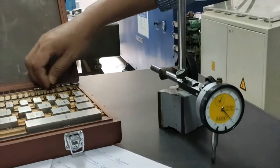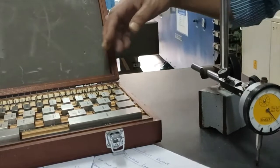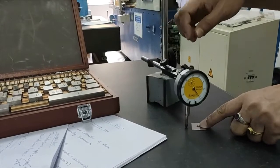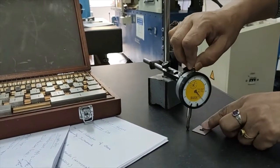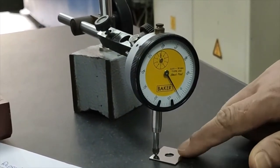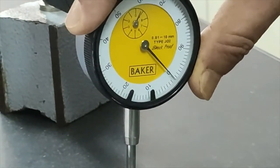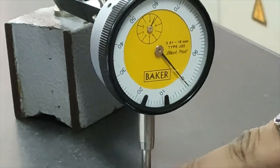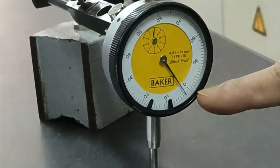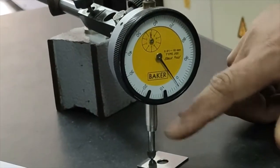Now I will put 1 mm by lifting it. Now see the reading. It is coming error, 0.02 error. So like this way up to 10 mm I will calibrate it.